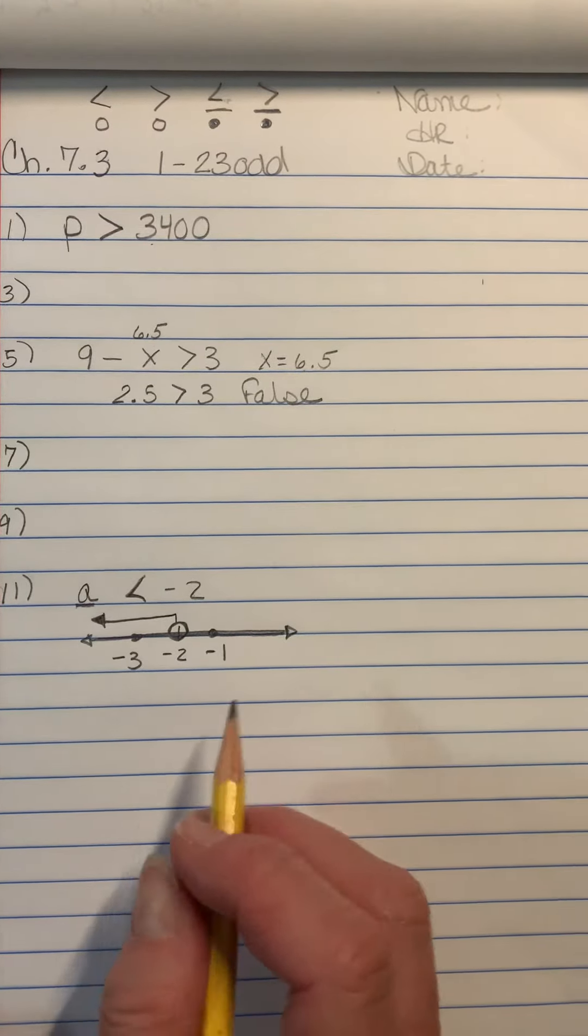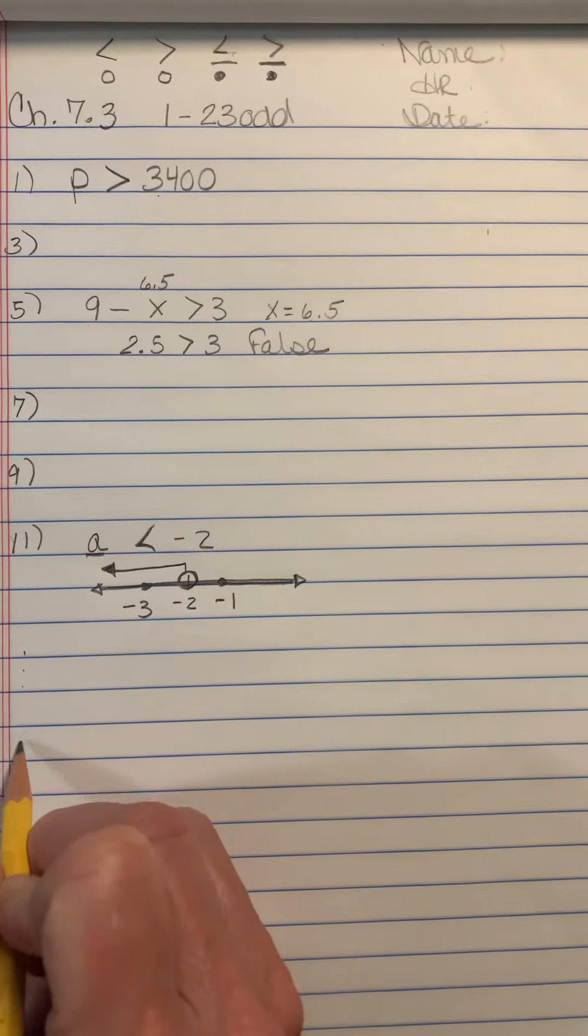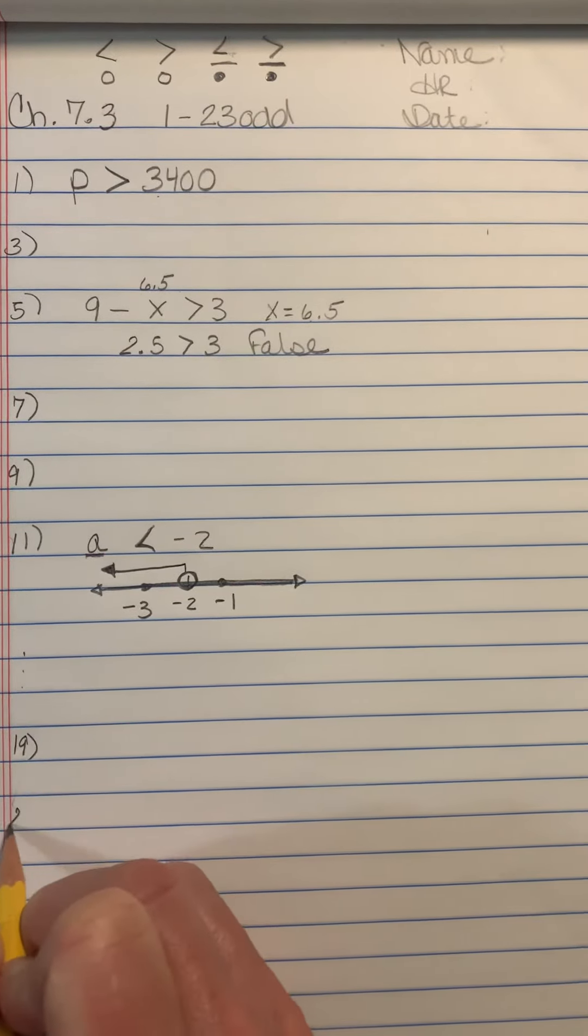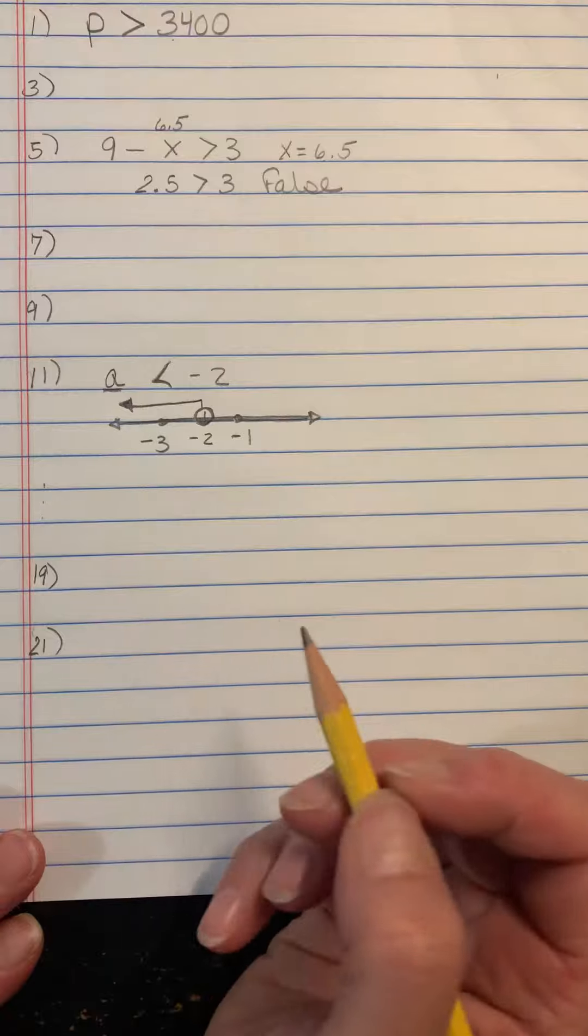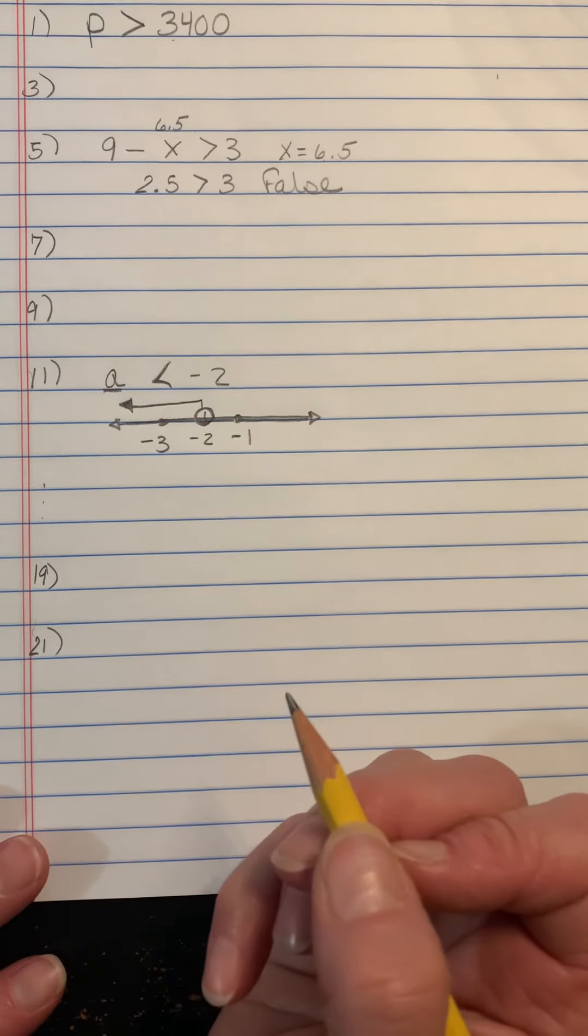That's how you're going to do 11 through 19. And then once you get to 21, it's going to give you the graph. And then you have to write the inequality.